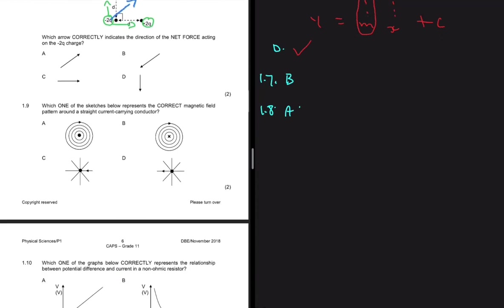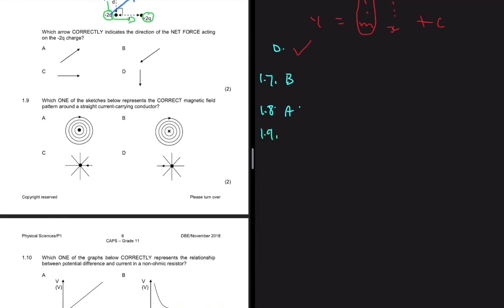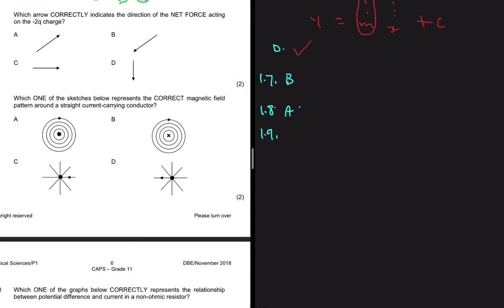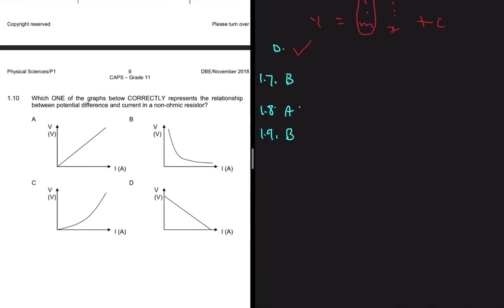Question 1.9 asks which sketch represents the correct magnetic field pattern around a straight current-carrying conductor. Options C and D are clearly incorrect. The correct answer is B, determined by applying the right-hand rule. Due to the video format, a link to a resource explaining this concept will be provided in the description.